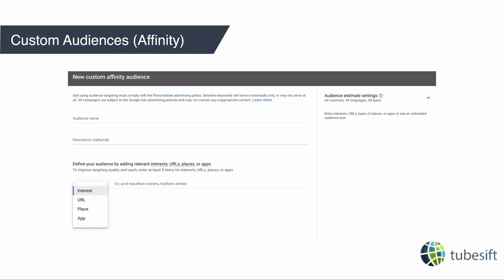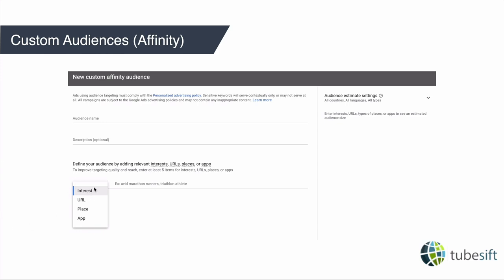The first custom audience type is custom affinity audiences. Affinity audiences are essentially people that are interested in a specific topic based on their browsing history. You can use predefined affinity audiences, or create your own. As you can see on screen, you can create these audiences based on interests, keywords, specific URLs they're visiting, places they've been, or apps they're using — all done through your audience manager in your Google Ads account.